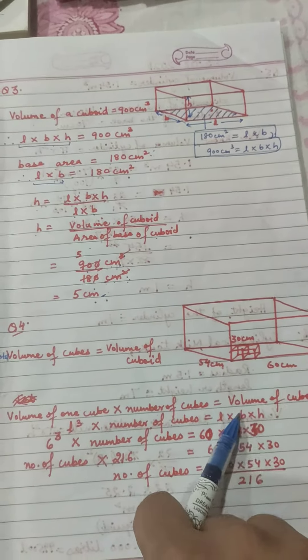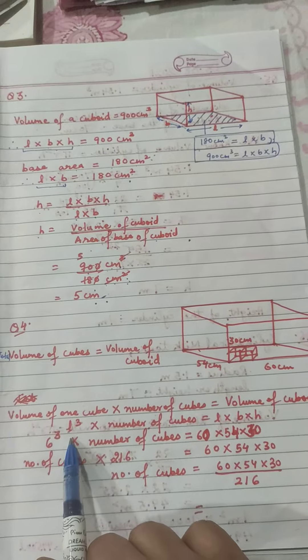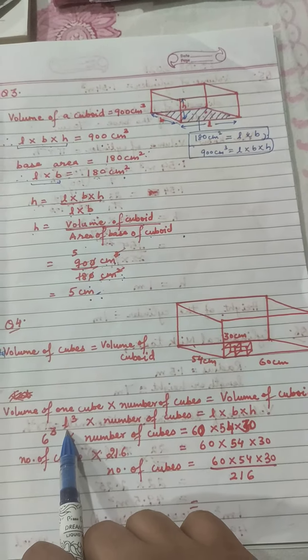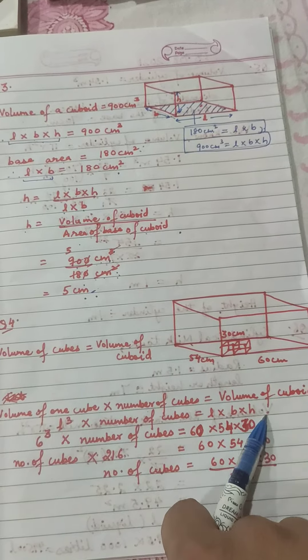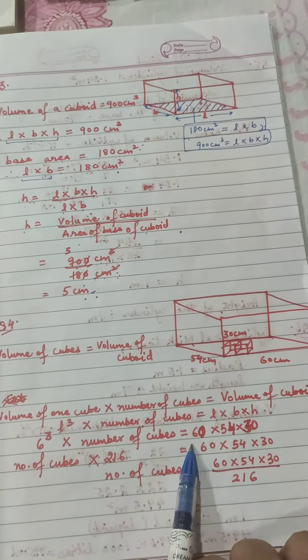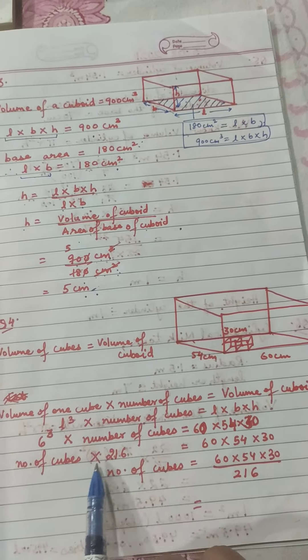number of cubes equals volume of cuboid. This means: volume of one cube is l³ if we take side as l, and number of cubes equals l×b×h. So 6³ × number of cubes = 60×54×30.